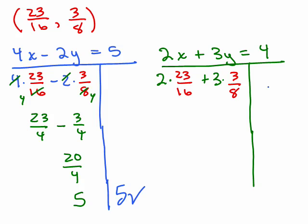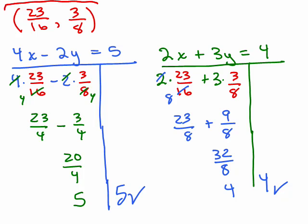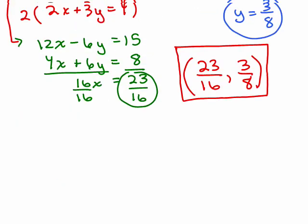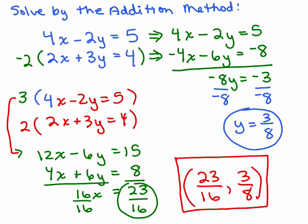And then we'll check it in the other equation, 2x plus 3y equals 4. 2 goes into 16 eight times, so I'm going to get 23 eighths. Now since I've got it in terms of eighths, I'm going to keep this in eighths. Plus 9 eighths, which is 32 eighths. And 32 divided by 8 is 4, and there's 4 on that side, so 23 sixteenths, 3 eighths is the correct solution to our system, and there you go.